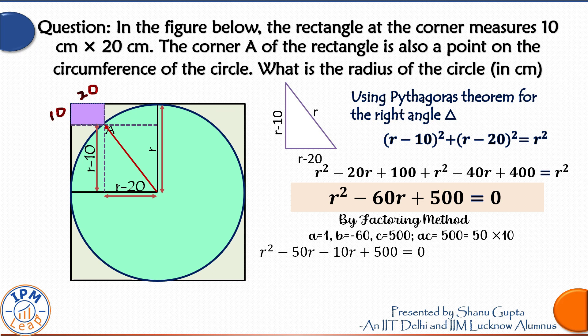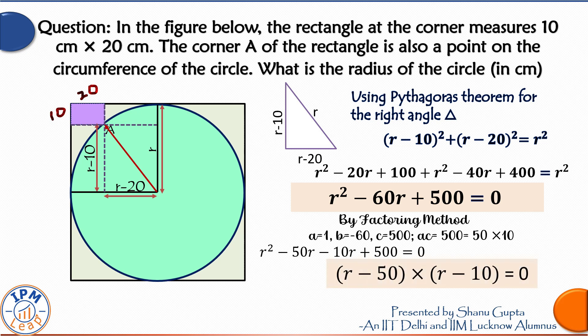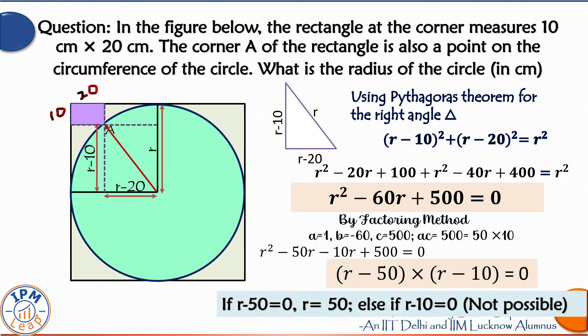We write the equation in terms of its two factors: R minus 50 into R minus 10 is equal to 0. If R minus 50 is equal to 0, R is equal to 50. Else if R minus 10 is equal to 0.